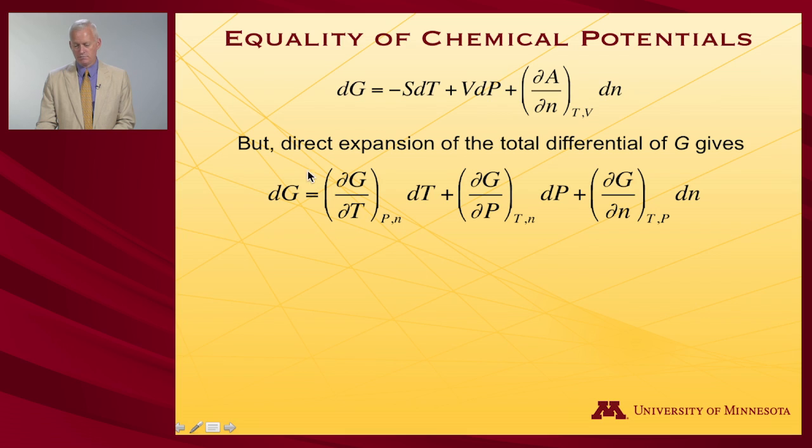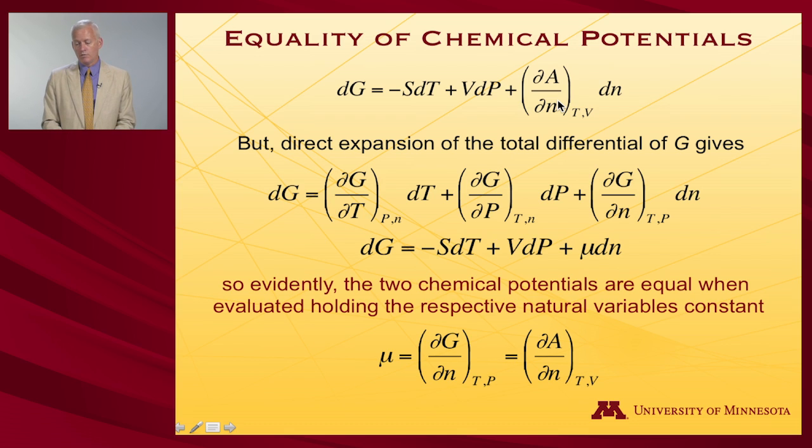And then I'll remind you that when we do a direct expansion of the Gibbs free energy, so here it is with respect to temperature, with respect to pressure, with respect to number of moles, put back in these thermodynamic quantities. So evidently, this term here is the chemical potential. This partial derivative of the Gibbs free energy with respect to number of moles, the chemical potential, is equal to the partial derivative of the Helmholtz free energy with respect to number of moles. So as long as we're holding the respective natural variables constant, temperature and volume in the case of Helmholtz, temperature and pressure in the case of Gibbs, the two chemical potentials are equal to one another.